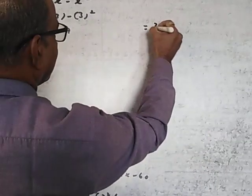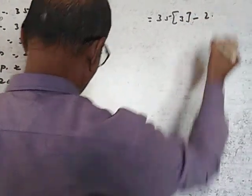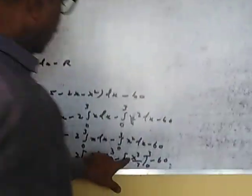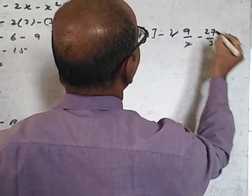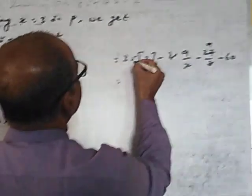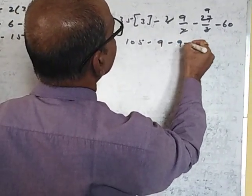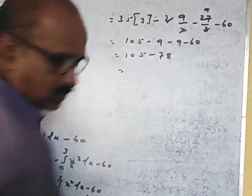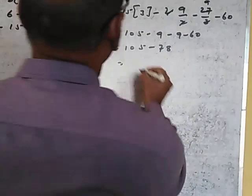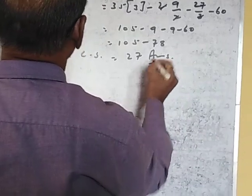Putting limits: 35 into 3, minus 2 into 9 by 2, minus 27 by 3, minus 60. That gives 105 minus 9 minus 9 minus 60, which equals 105 minus 78, so the result is 27. Therefore consumer surplus equals 27.